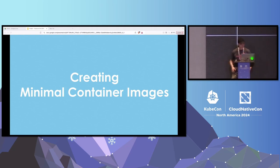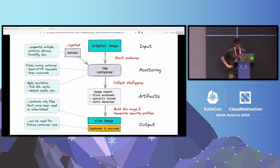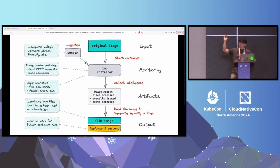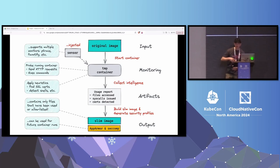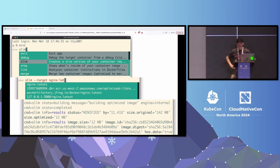One of the options is slim toolkit. Here's a high-level overview of what happens: we take the image you have, we create an ephemeral instance, we inject a sensor, we generate synthetic application interactions, and then we capture lots of telemetry about the container and the application. Then we take that telemetry and rebuild the application in the container using only the components you need. We also generate security profiles.